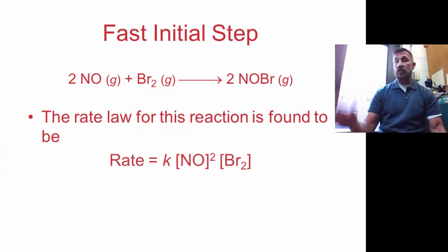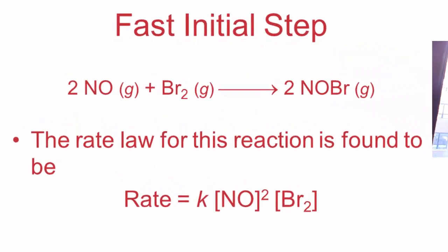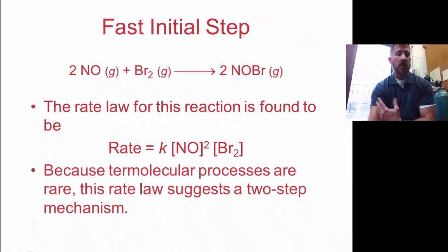Next we're going to look at this second example of a reaction. In this one we have two nitrogen monoxide react with bromine as a gas and produces two NOBr. Now the rate law for this is actually found to be rate equals K times nitrogen monoxide squared times the concentration of bromine. Because termolecular processes are very rare, we would most likely expect this to be a two-step mechanism because we're not expecting all these to collide at once.